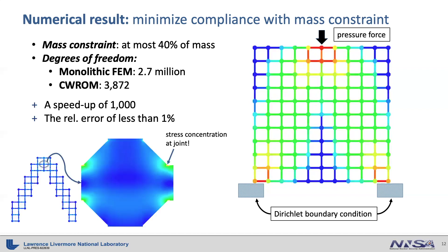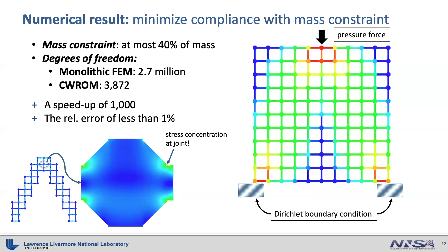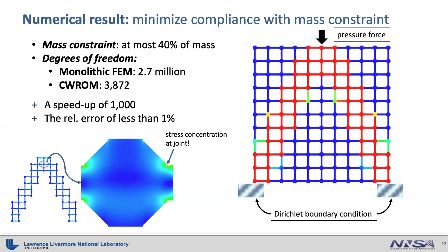One great advantage of the component-wise reduced order model is that it restores the high dimensional solution. For example, we can restore the very detailed contour of stress fields at any component. We can even catch some stress concentration region.